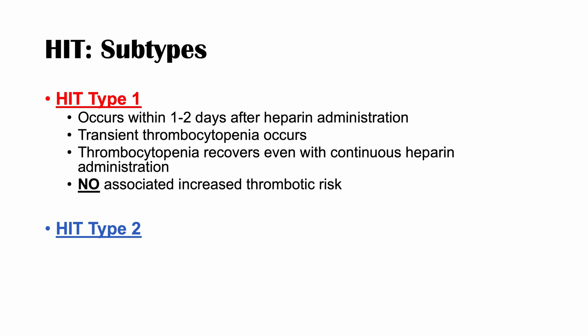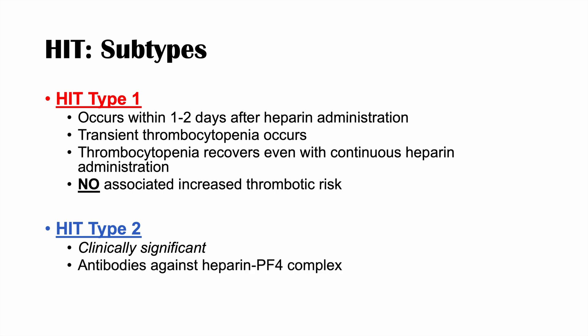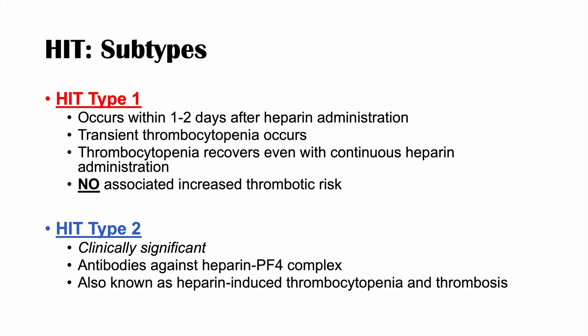HIT type 2 is the clinically significant heparin-induced thrombocytopenia — when you hear HIT, this is the one they're talking about. This is where we get antibodies against the heparin-PF4 complex. It's also known as heparin-induced thrombocytopenia and thrombosis, or HITT. There is an increased thrombotic risk because the antibody activates the coagulation cascade.